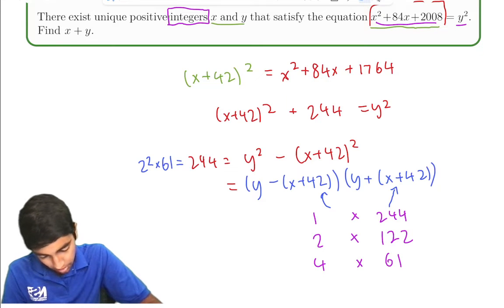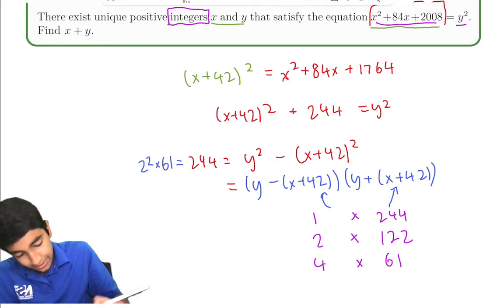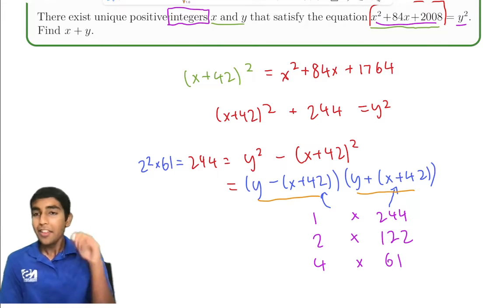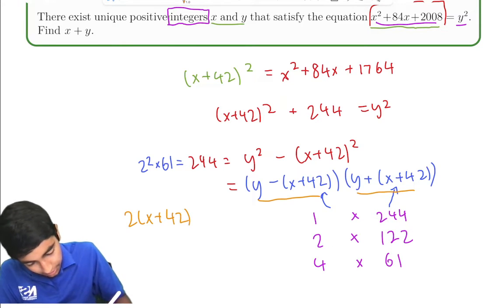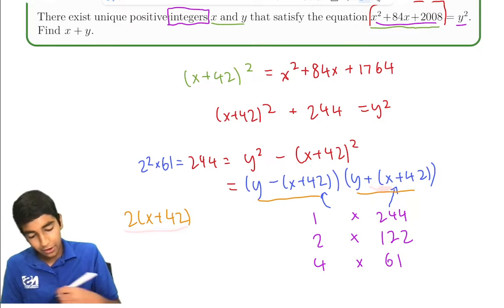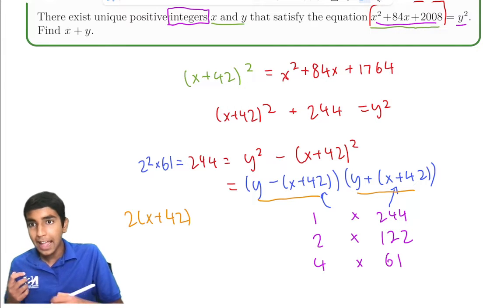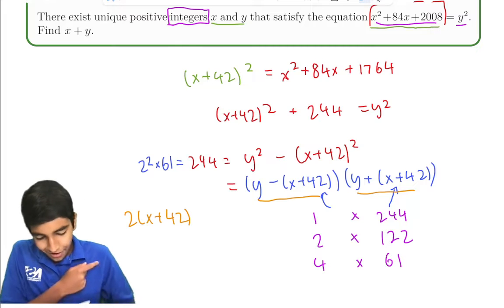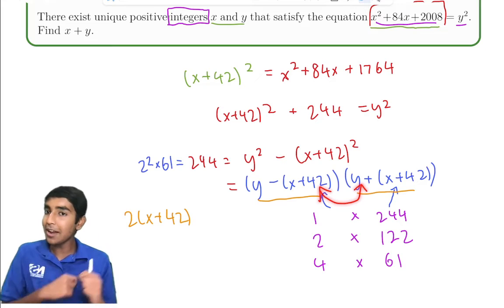So over here we have the possibilities. The key thing to notice is that y - (x + 42) and y + (x + 42), they only differ by 2(x + 42), right? This thing here is 2(x + 42) bigger than that thing over there. But what is 2(x + 42)? That is an even number.